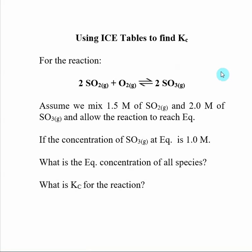So let's look at another example of using ICE tables to find the Kc for a reaction. In this case, when we do these types of problems, typically you are given some initial values of some of the species, at least,